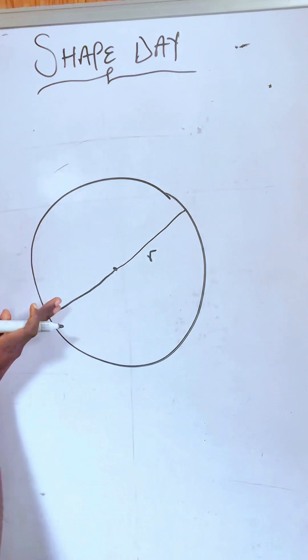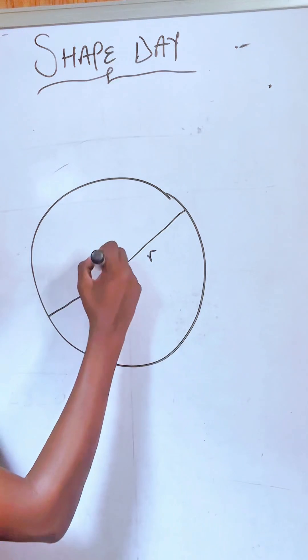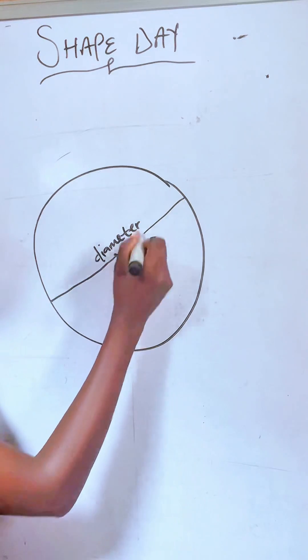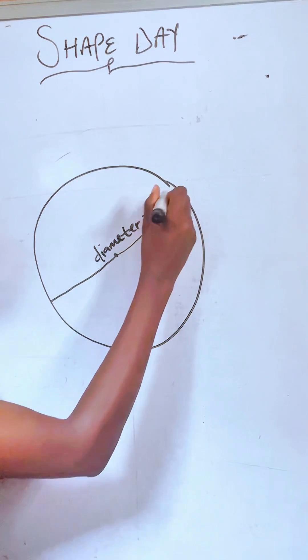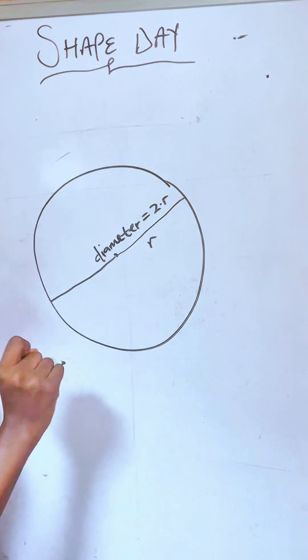Now any line that divides the circle into two equal parts is called the diameter. And that's why you know that the diameter is always two times your radius, because you add two of the radius to give you a diameter.